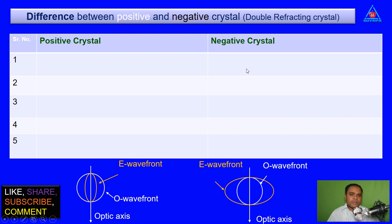In this video, we will see the difference between positive and negative crystals. That is double refracting crystal. Here you will see the positive crystal figure for wave propagation and here you will see the figure for wave propagation for negative crystal.